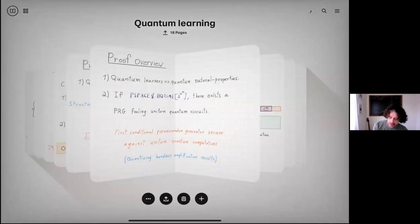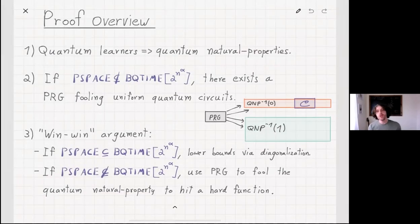That's because the last step, it's a win-win argument, which if you never saw it, is something very nice, I think. The idea is that we show, suppose that P-SPACE is contained in BQ time n to the n to the alpha, then we can show that in that case, it's actually very easy to prove lower bounds by diagonalization, by simple tools. But then, if that's the case, we win, we're happy we have a lower bound in a simple way.